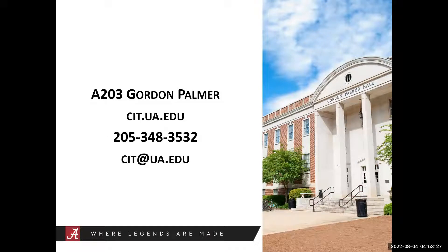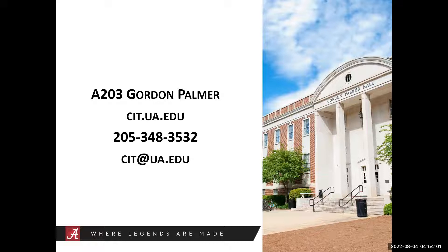This slide includes some of the ways you can get in touch with us. We're located in A203 Gordon Palmer — on the second floor in the back portion of the building known as the Annex. Our website address is cit.ua.edu, where you'll find information about us and the technologies we support. You can search our knowledge base for quick answers to frequently asked questions, step-by-step guides with pictures, and links to relevant vendor documentation. We encourage you to visit us online to submit help requests, join a workshop or webinar, and subscribe to news updates. You can also reach us by phone at 205-348-8532 or email at cit.ua.edu.